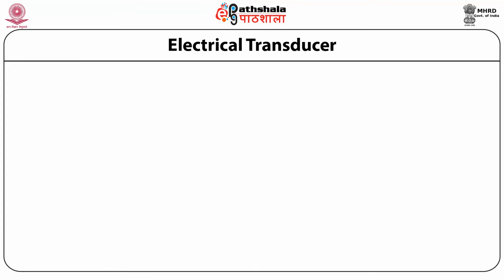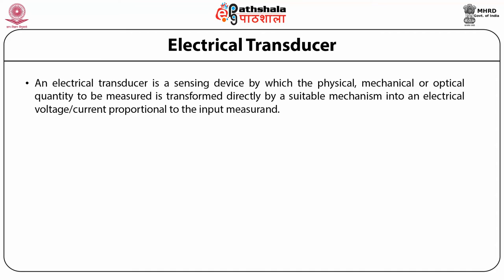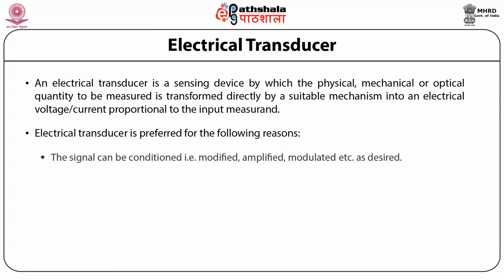An electrical transducer is a sensing device by which a physical, mechanical or optical quantity to be measured is transformed directly by a suitable mechanism into an electrical voltage or current proportional to the input measured. An electrical transducer is always preferred because the signal can be conditioned — that is modified, amplified, modulated, etc. — as desired.